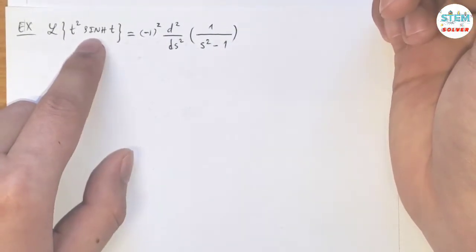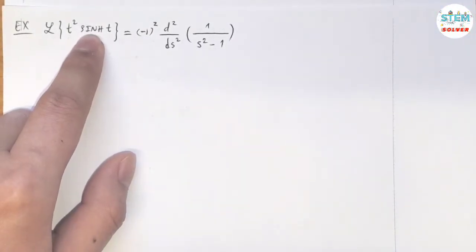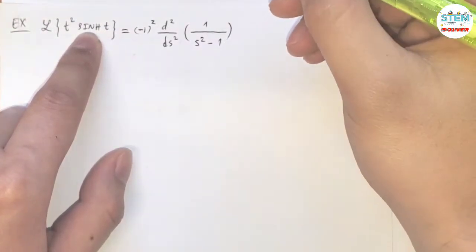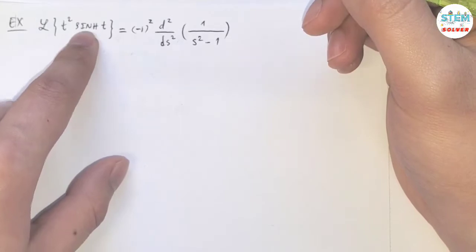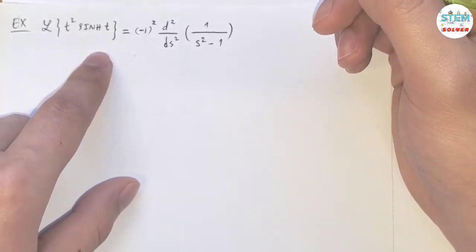Okay, so you gotta memorize the basic Laplace transforms. Sinh is one of the basic ones. And if you don't, I'll put a link in the description box so you can go there to take a look. But it's better to memorize because there are like 7 basic functions for the Laplace transform. It's not hard to memorize.